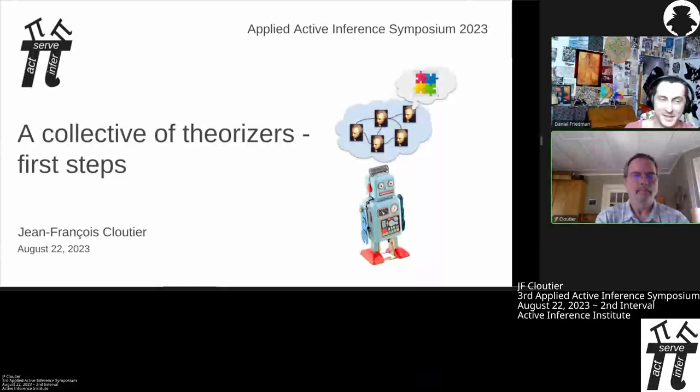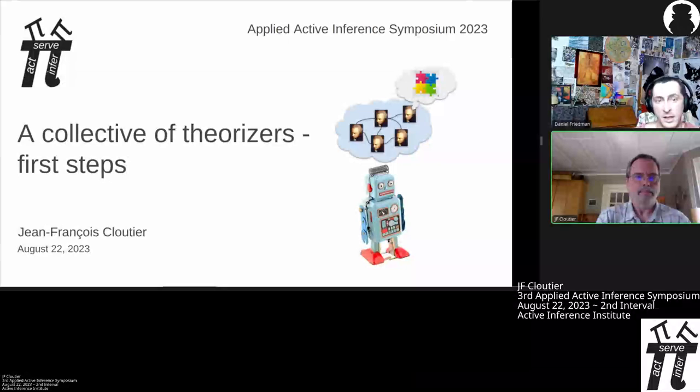Hello and welcome everyone. Welcome back. This is the second interval of the third Applied Active Inference Symposium at the Active Inference Institute on August 22, 2023. This is going to be another packed and exciting interval, and we're kicking it off with Jean-Francois Cloutier, a collective of theorizers' first steps. So JF, thank you for joining and to you for this presentation.